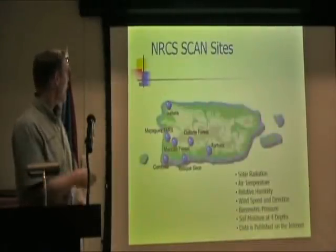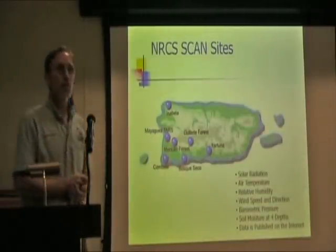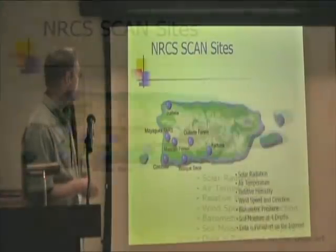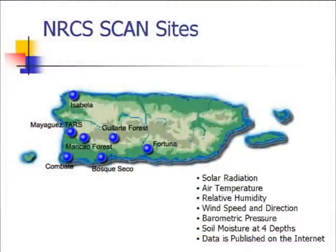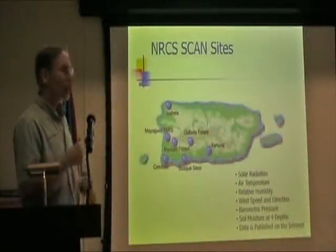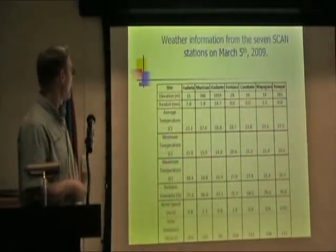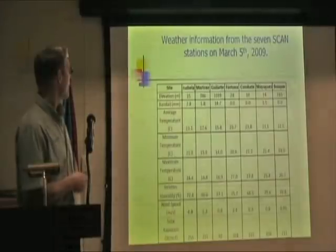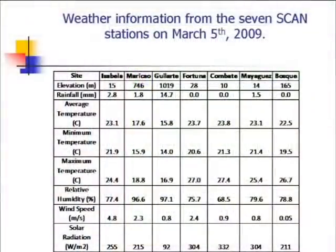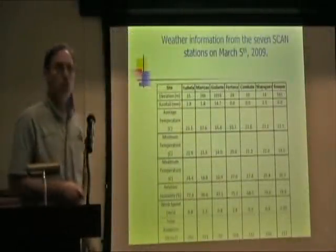And we do that, or we did that in this case with these seven stations. These are the natural resource conservation stations, and they produce these data over here, but we were primarily interested in temperature for that nudging. And these are the data for that date, March 5th. We have the elevation of the station. These are the seven stations, rainfall, average temperature, minimum temperature, maximum temperature, relative humidity, wind speed, and solar radiation.